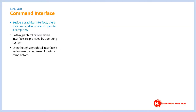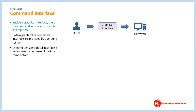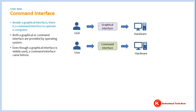We've established there is a user, a graphical interface, and hardware. But not only a graphical interface — you could also have a user, a command interface, and hardware. In a graphical interface, you click on graphical elements and that causes hardware to spring into action. In a command interface, you type commands and that causes hardware to spring into action.